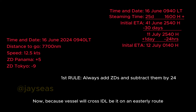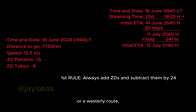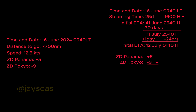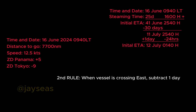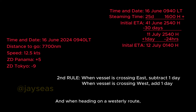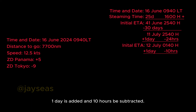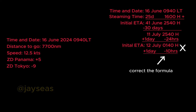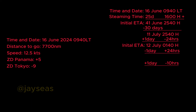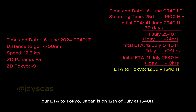Because the vessel will cross the IDL, whether on an easterly or westerly route, ZDs must always be added, and the sum must always be subtracted from 24. So 5 plus 9 is 14 hours, minus 24 gives 10 hours. The next rule: when on an easterly route, subtract one day; when heading westerly, add one day. Since the vessel is heading westerly, one day is added and 10 hours are subtracted. Result: ETA to Tokyo, Japan is 12th of July at 1540 hours.